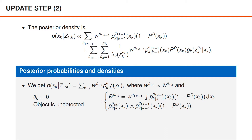Similarly, the posterior density given the same sequence of associations is proportional to the predicted density times 1-p_d, where the weight w_{theta_{1:k-1}} is ignored since it is a constant. These are essentially the standard expressions when the object is undetected at time k, but the unnormalized weight is now scaled by the weight of theta_{1:k-1}. This factor tells us that it is not enough to consider if theta_k equals zero is reasonable, but we also need to consider if the earlier parts of the sequence of associations are reasonable.